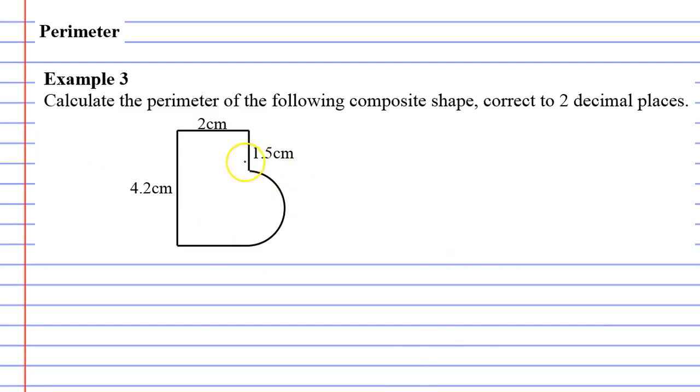You can see we've kind of got like a rectangle with half a circle attached to the side of it. And it's really important to be able to do these because not all shapes are rectangles, triangles, circles, and so forth.